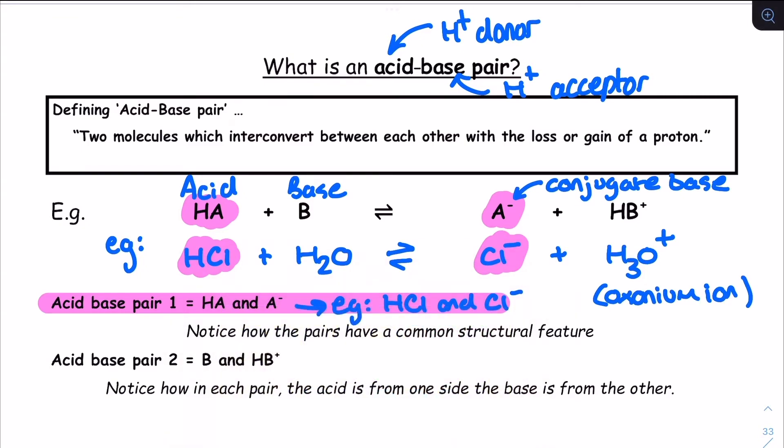To put some rules around this pairing, we need to make sure we don't pair the wrong acid with the wrong base. The pairs must be a one-from-each-side format, and they must interconvert between each other, in accordance with the definition, with the loss or gain of a proton.